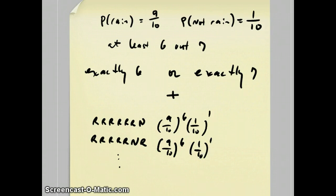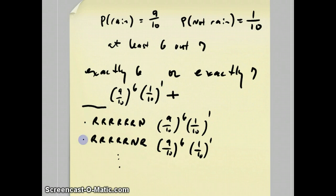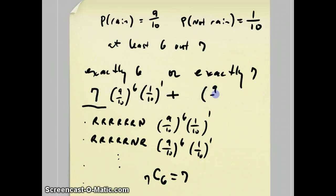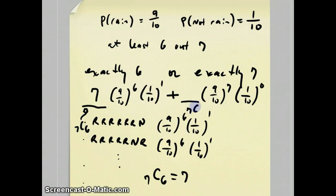So the probability of getting exactly six days of rain is nine tenths to the sixth. We have to put a coefficient out here for the number of different ways that this can happen — that's where combinations come in. The number of ways is seven C six, which equals seven. The same thing happens for exactly seven days of rain: nine tenths to the seventh times one tenth to the zero. The coefficient for exactly six was seven C six; this coefficient is seven C seven, which equals one.